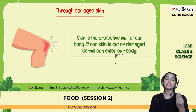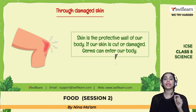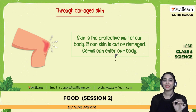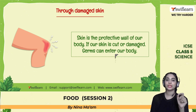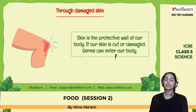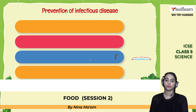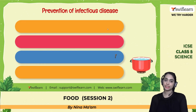Skin acts as a protective wall for our body. If our skin is cut or damaged, germs can enter. For example, if you got a cut on your leg and walked in dirty water without a shoe, the tetanus virus could enter your body through that cut. We must cover cuts and use protective medicines to prevent such infections.